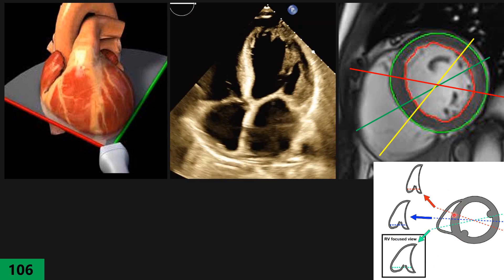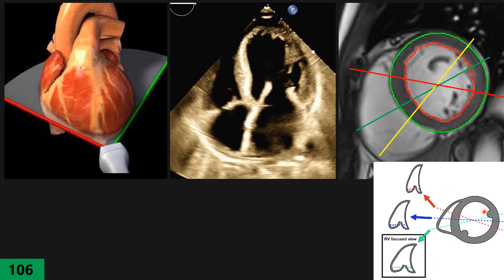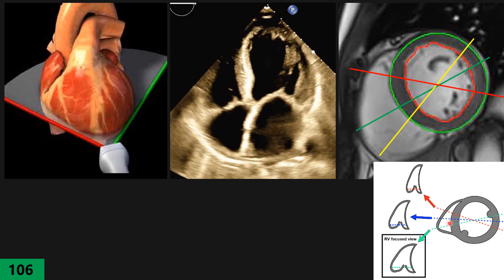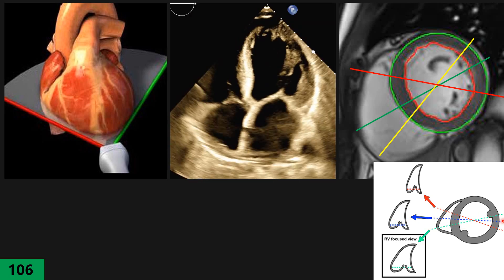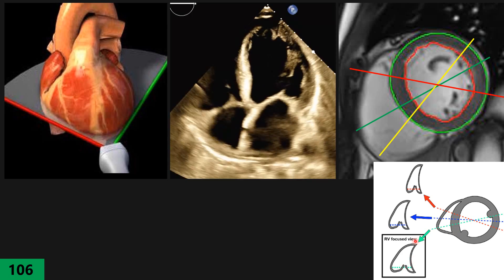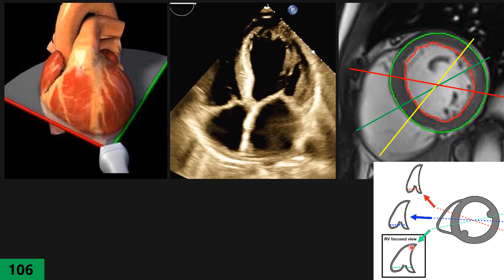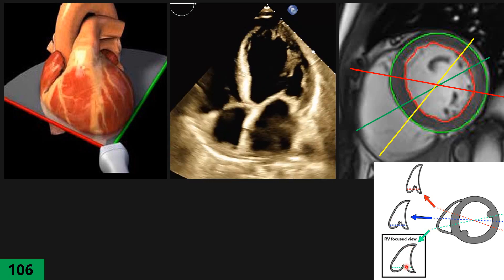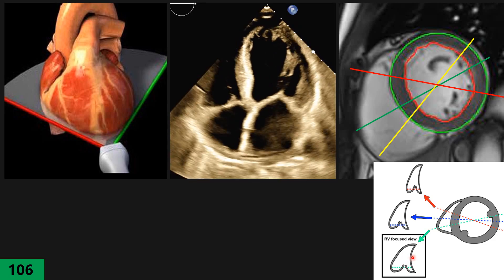Looking at the schematic, here is our standard apical four chamber view. Then we twist it a little counterclockwise based on their definition, and we get the largest RV diameter. They explain this largest diameter is what we measure for the base and mid of the RV.